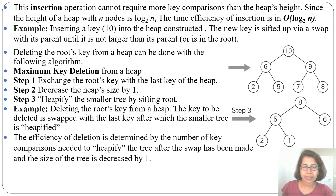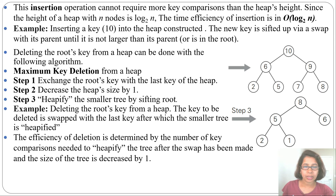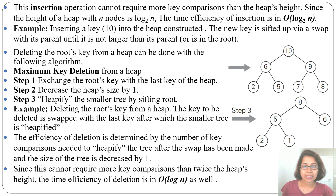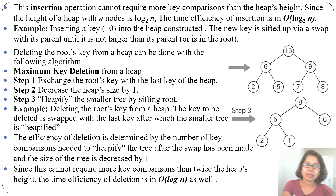The efficiency of deletion is determined by the number of key comparisons needed to heapify the tree after the swap. Swapping the root with the last node is just one step. Since heapify cannot require more key comparisons than twice the heap height, the time efficiency of deletion is O(log n).